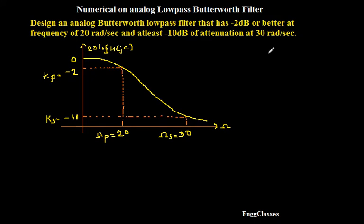Let me plot the graph of a low-pass Butterworth filter with respect to 20 log H(jω) versus ω. It has been given that Kp is equal to minus 2 at 20 radians per second and Ks is equal to minus 10 at 30 radians per second.